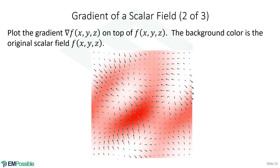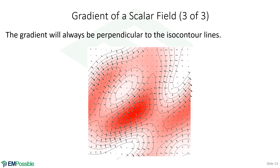The gradient points uphill and conveys how steeply or how quickly the numbers are increasing in that direction. If we plot the isocontour lines, the gradient arrows are always perpendicular to those lines. That makes sense because if you walk along an isocontour, you're not changing elevation. Since the gradient points along the steepest rate of change, it has no components in the direction of the isocontour lines.